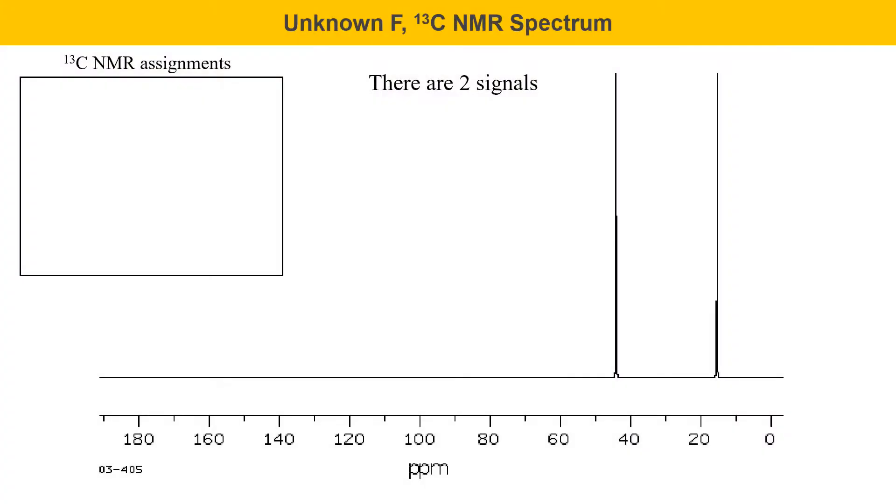The carbon NMR spectrum for unknown F is fairly simple. There's just two signals. That means there's only two types of carbon atoms. There are certainly more than two carbons in this molecule though. So again, this is a molecule that has some symmetry and you'll need to figure out what that means.